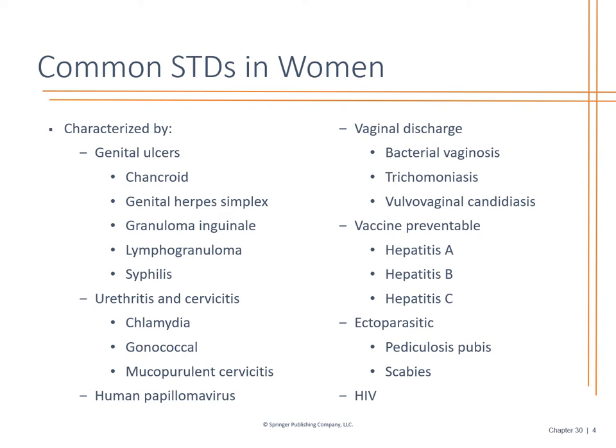Urethritis and cervicitis — what is the causative agent? What bacteria is causing it? It can be chlamydia, gonorrhea, or mucopurulent cervicitis. This is why a pelvic exam with cultures is so important. Human papillomavirus — have they had the Gardasil treatment? Have they had abnormal pap smears or a positive HPV? Is there a family history of HPV?